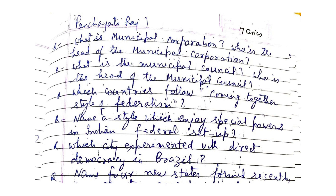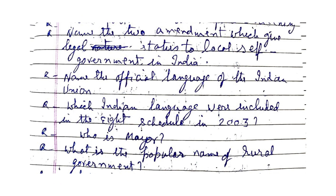What is a Municipal Council and who is its head? Which country's style of federalism does India follow? Which state enjoys special powers in the Indian federal setup? Which city experimented with direct democracy? In Brazil, name the new states formed recently. Name the two amendments which gave legal status to local self-government in India. Name the official language of the Indian Union.